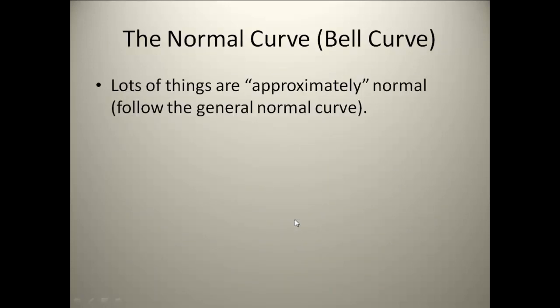The normal curve is a special density curve. A normal curve is your general bell-shaped curve, meaning it comes up nicely, comes down nicely, and it's symmetrical. There are a couple of things about your normal curve.